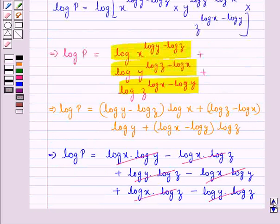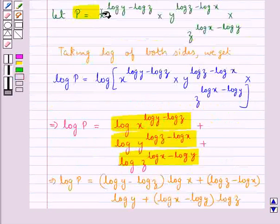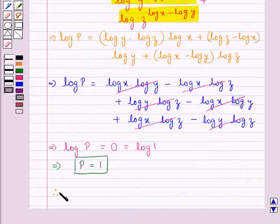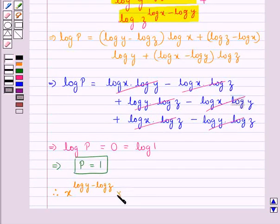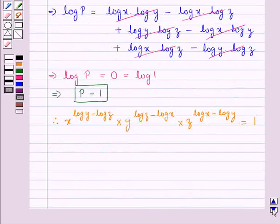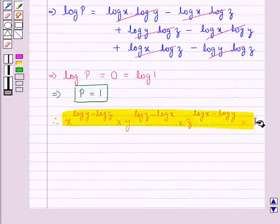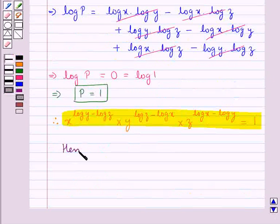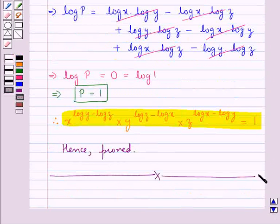And we had supposed P to be this expression. Therefore, we can say that x to the power (log y minus log z) into y to the power (log z minus log x) into z to the power (log x minus log y) is equal to 1. And this is what we were supposed to prove. So, here it is proved. This completes the session. Hope you have understood the solution of this question.